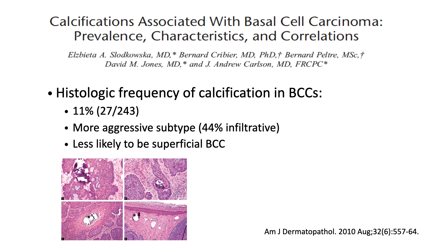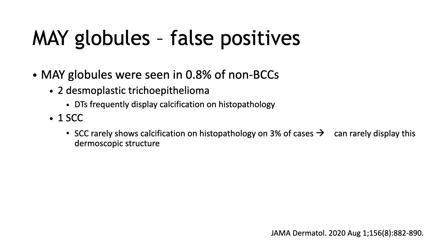What about dermpath studies and the process of calcifications in BCC? This study was published back in 2010 and showed that up to 11 percent of BCCs had calcifications on biopsies. The more aggressive subtypes had up to 44 percent of calcifications, and calcifications were less likely to be seen in superficial BCCs — findings very similar to our dermoscopic findings of MAYG globules.